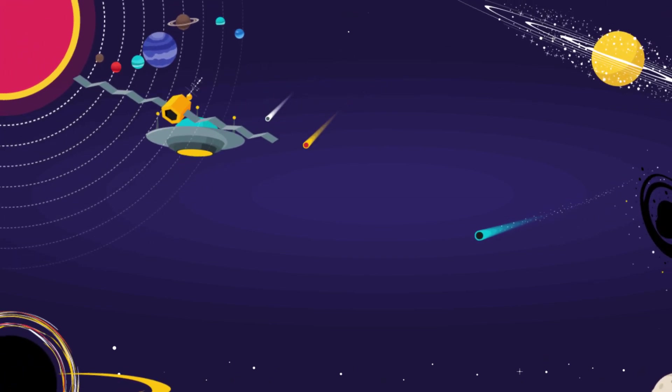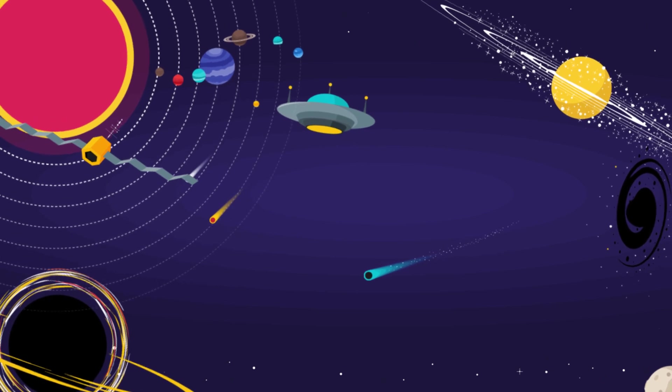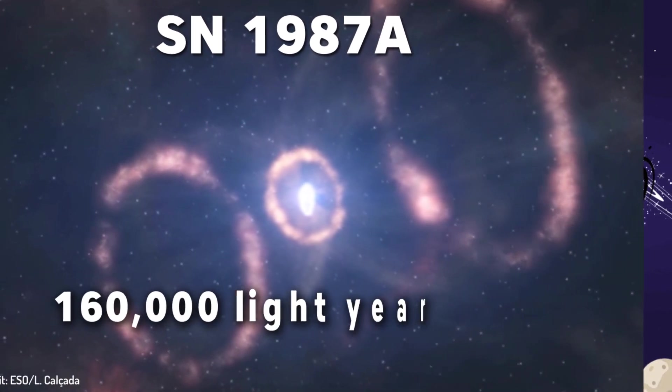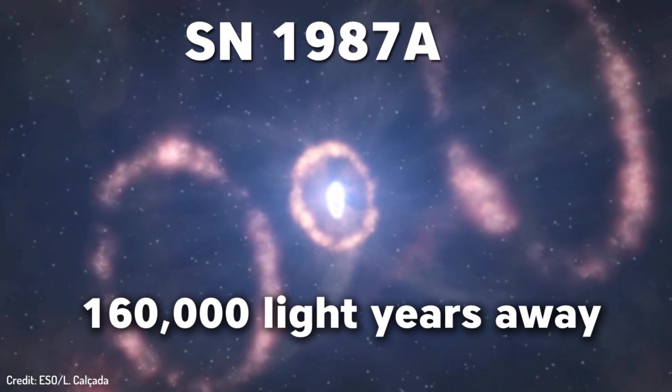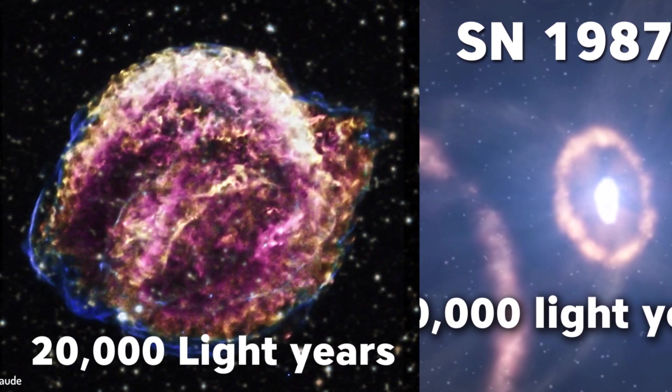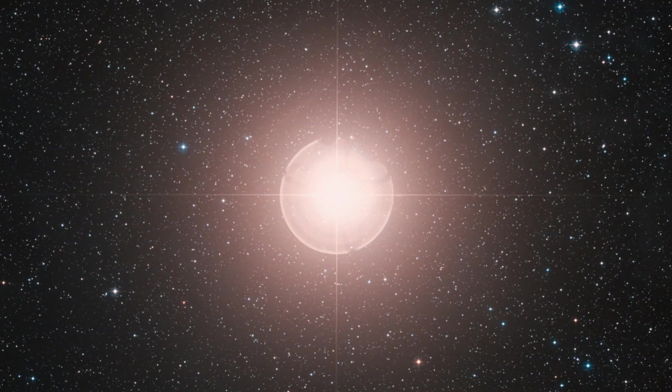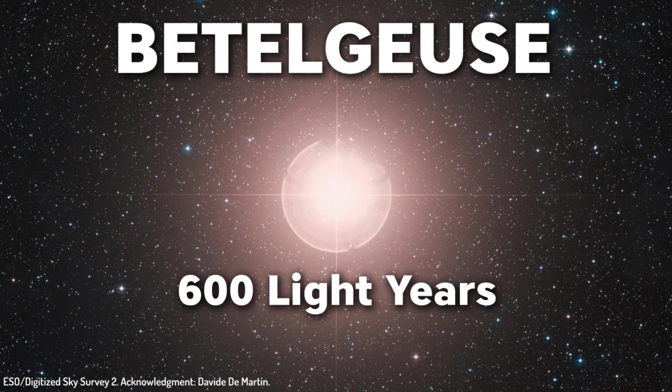To put it into perspective, the supernova that we saw in 1987 is 160,000 light years away. We are completely safe. Kepler's supernova was 20,000 light years away, still very safe, but Betelgeuse is approximately 600 light years away.